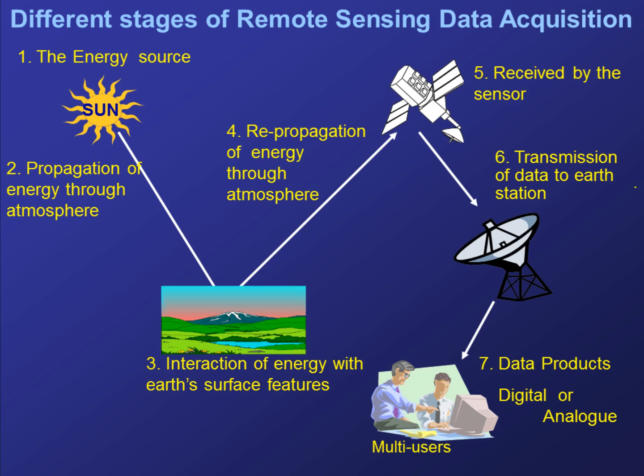This shows the different stages of remote sensing data acquisition. It is a seven-step process. First, the source of energy is the sun. It propagates energy through the atmosphere in the second step. In the third step it interacts with the earth's surface features. In the fourth step, energy is re-propagated through the atmosphere in the form of electromagnetic waves. Fifth, it is received by a sensor. In the sixth step, the sensor transmits these signals to the earth station. In the seventh step, the earth station produces digital data called satellite images, on which we perform various activities to produce useful output.